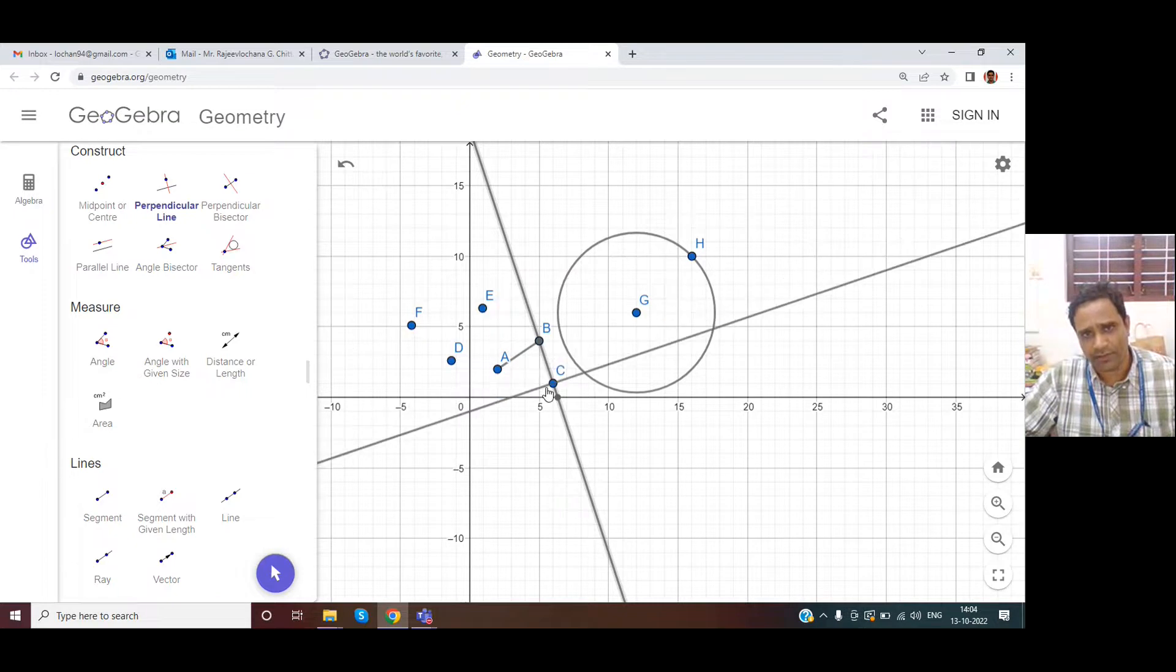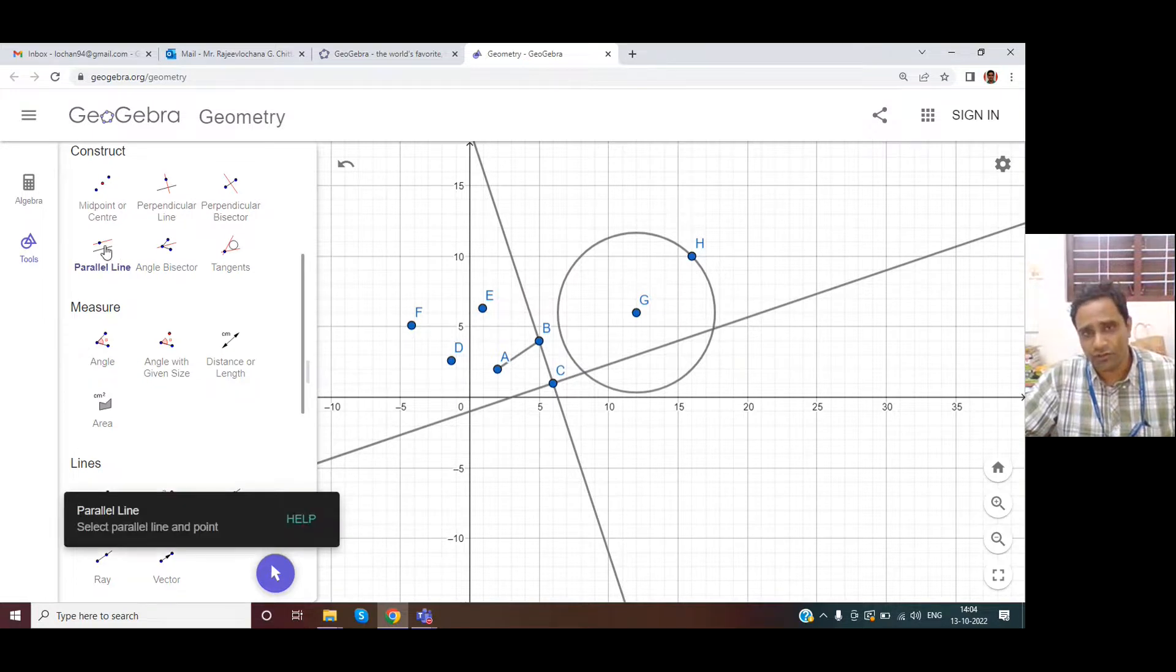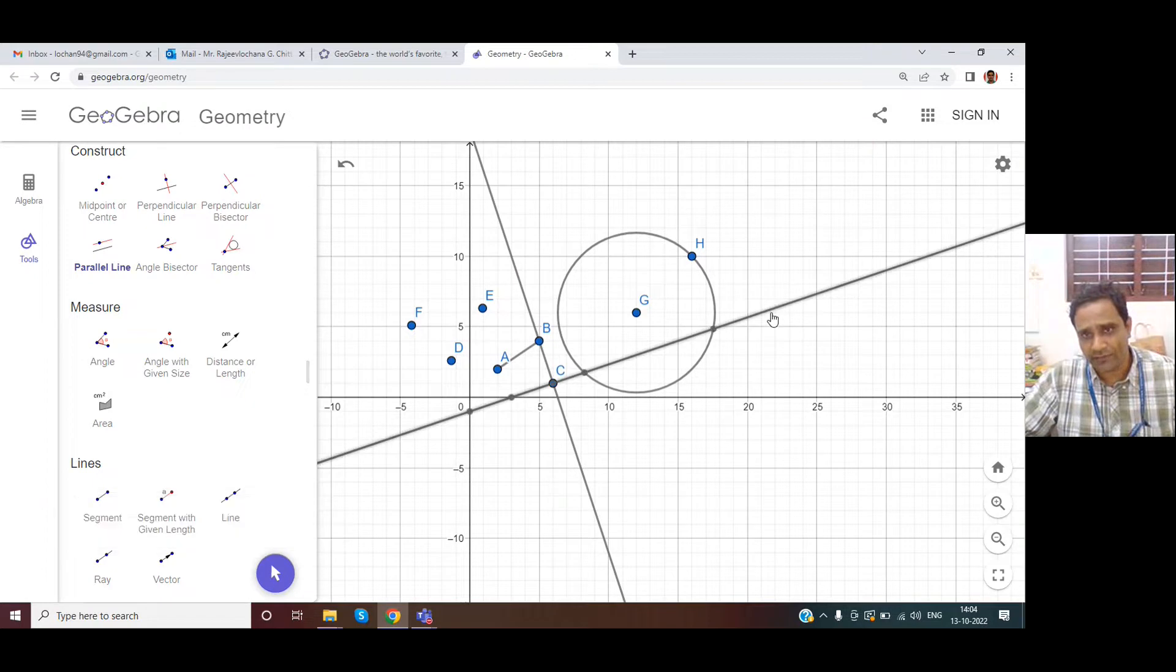Similarly I can use a parallel line command. I want a line that is parallel to this but passing through maybe H. Like that you will be able to generate a lot of construction lines also.